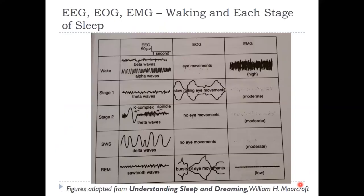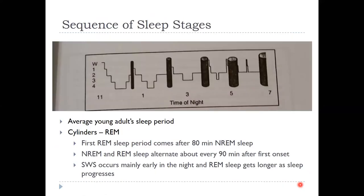Here's a chart showing differences between sleep stages and types. When looking at typical sleep in an average young adult across the night, the cylinders represent REM sleep. As the night progresses, you actually spend much more time in REM. You go from awake to stage one, stage two, stage three, stage four, then back to stage three, stage two, and then hit REM. Then you cycle through stages again, spending more time in slow wave sleep and REM as the night progresses.